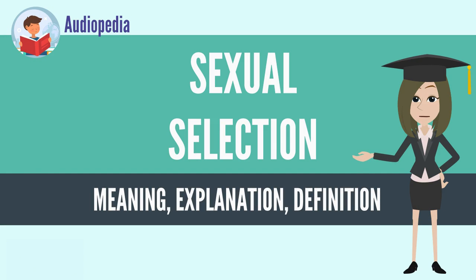Sexual selection is a mode of natural selection where members of one biological sex choose mates of the other sex to mate with (intersexual selection), and compete with members of the same sex for access to members of the opposite sex (intrasexual selection). These two forms of selection mean that some individuals have better reproductive success than others within a population, either from being more attractive or preferring more attractive partners to produce offspring.